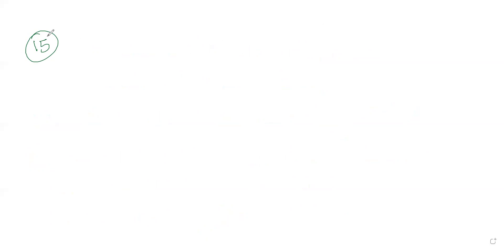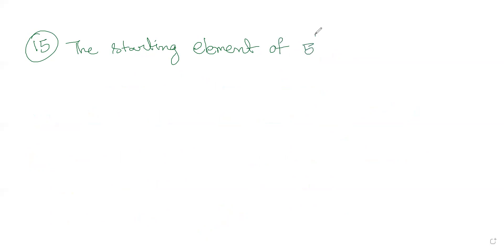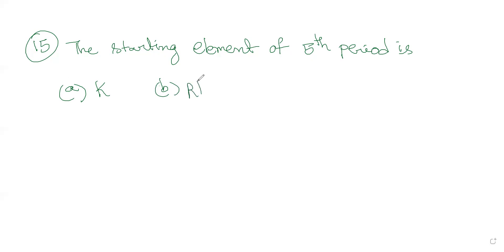Question 15: The starting element of the fifth period is — option A: potassium, option B: rubidium, option C: krypton, option D: xenon. Option B is the right answer — rubidium.